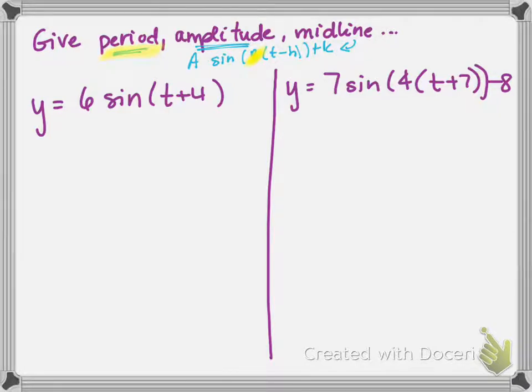The B value is not the period, but we have a formula that tells us period comes from 2π, which is the normal period for a sine or cosine graph, divided by the absolute value of that B number.